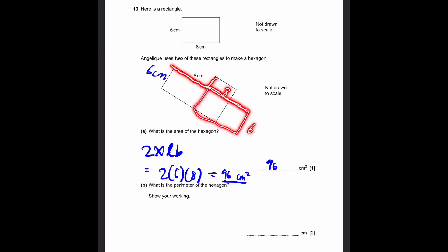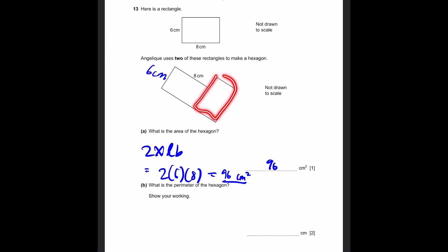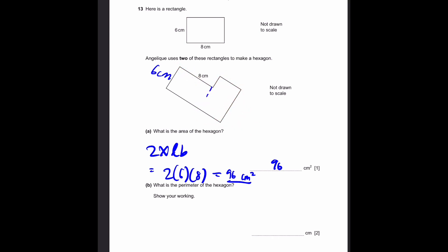But we can see that there is an extra line to connect one side to the other. Therefore this rectangle has to be split, giving us sides of 6, 8, 6, and 8. And now we have one more side left to find — this side is going to be 8 minus 6, which is 2 centimeters.